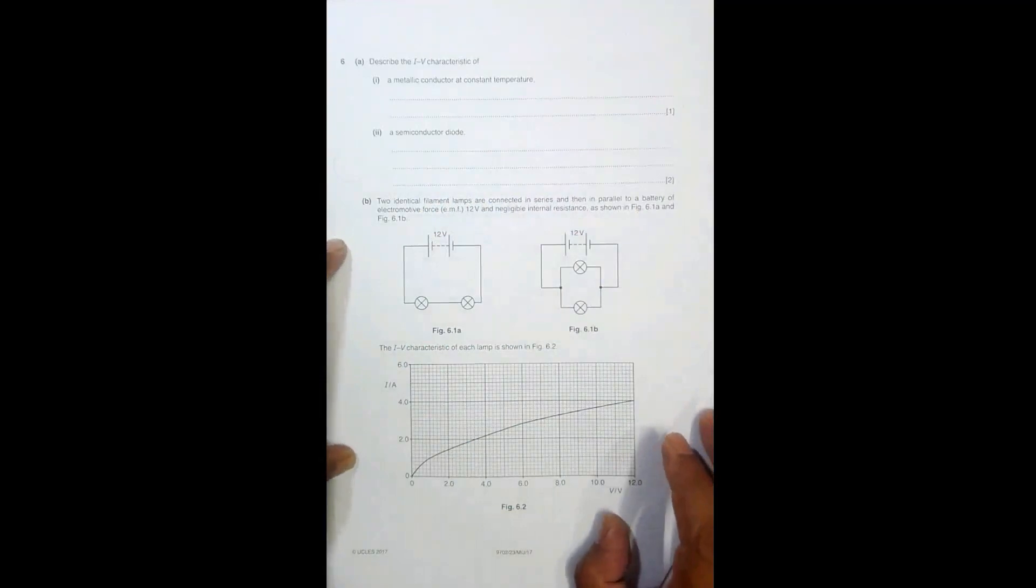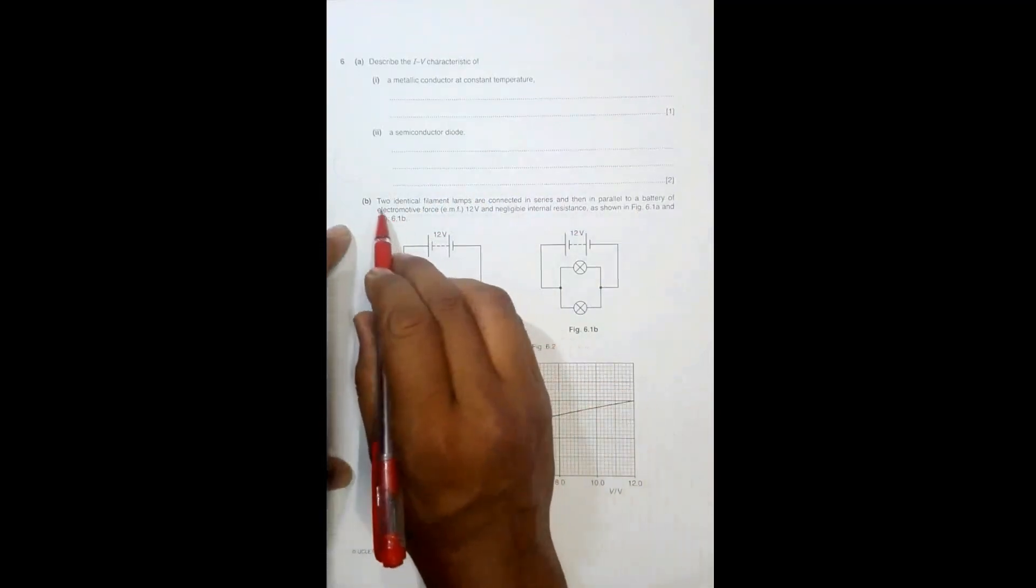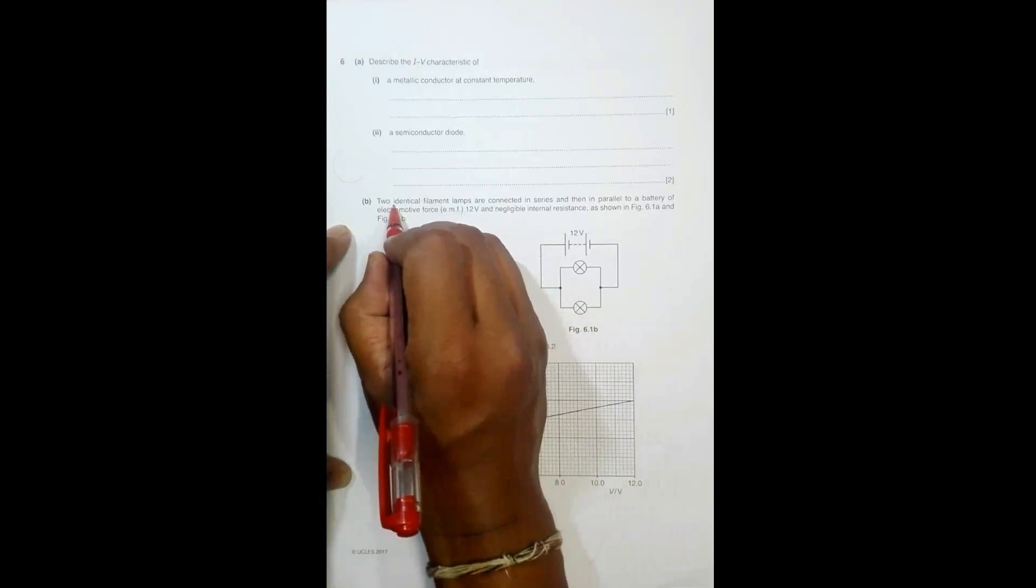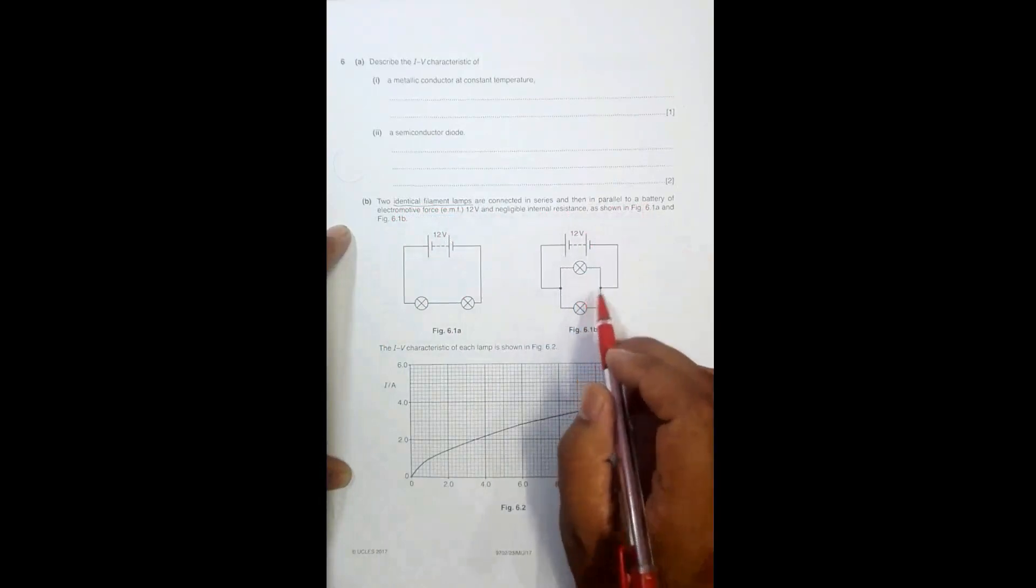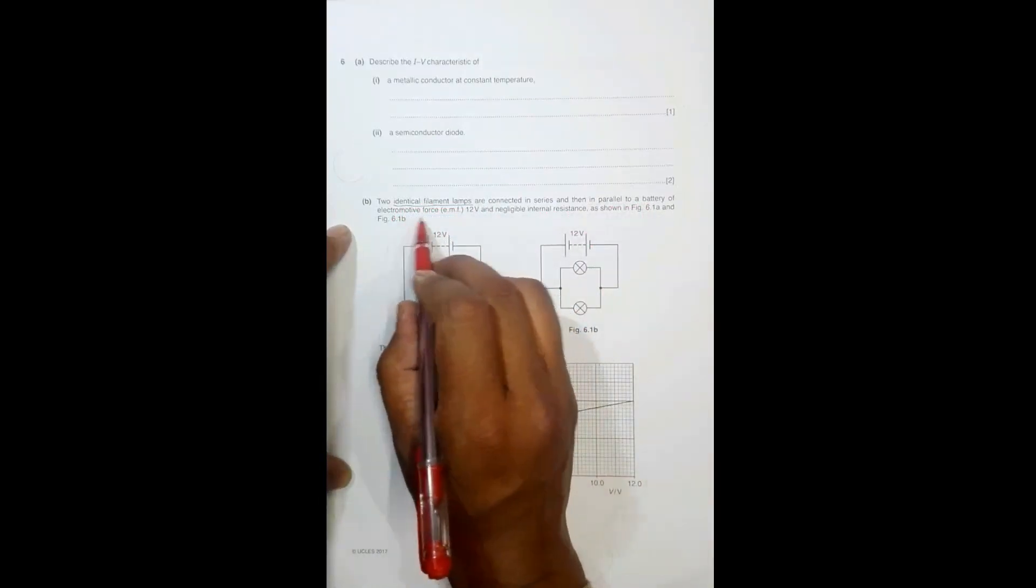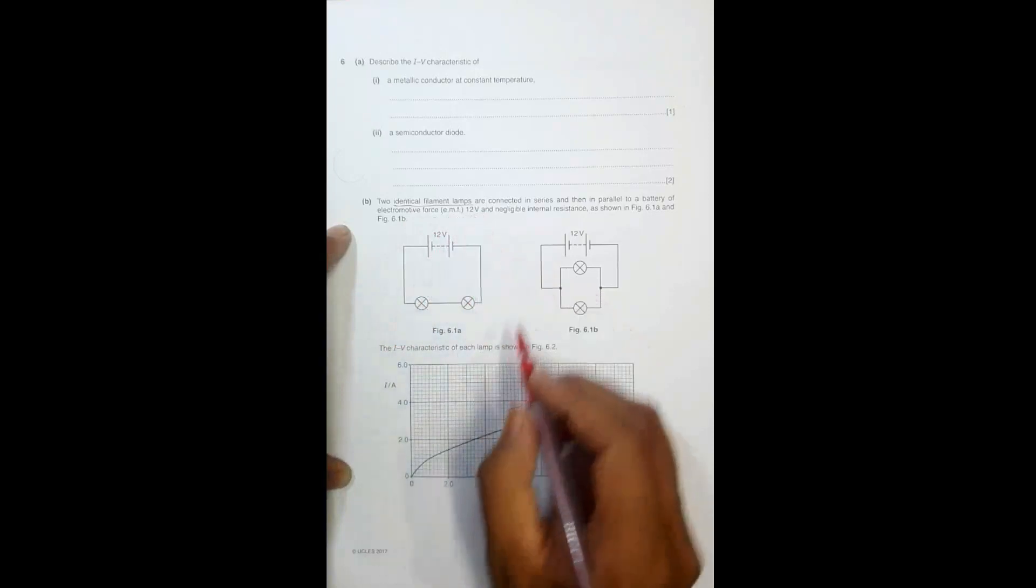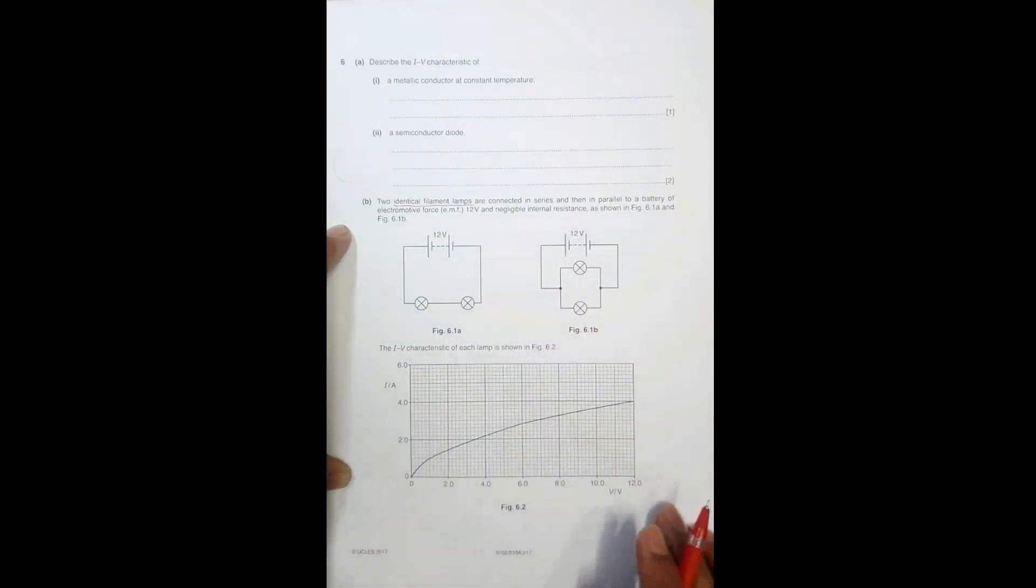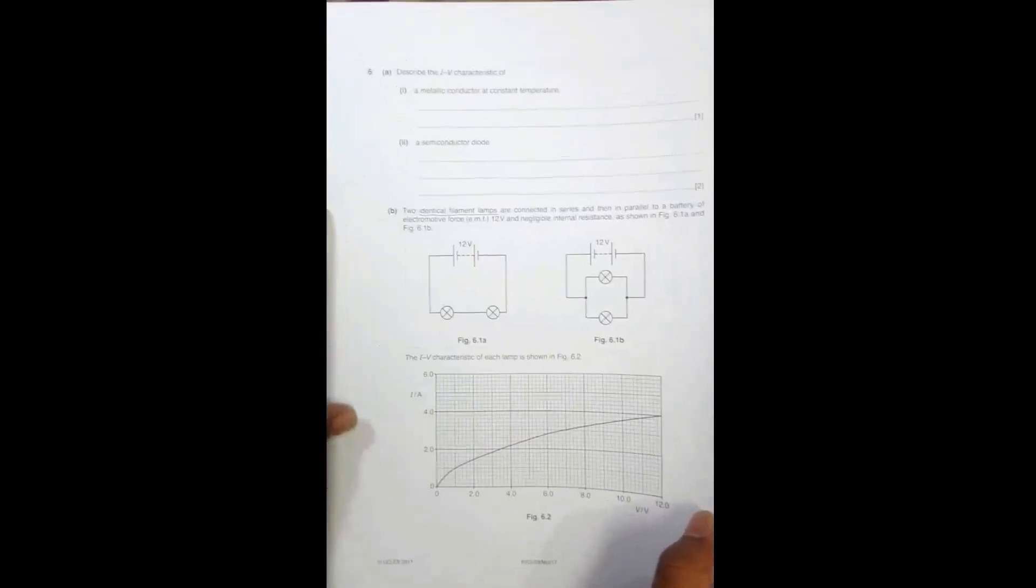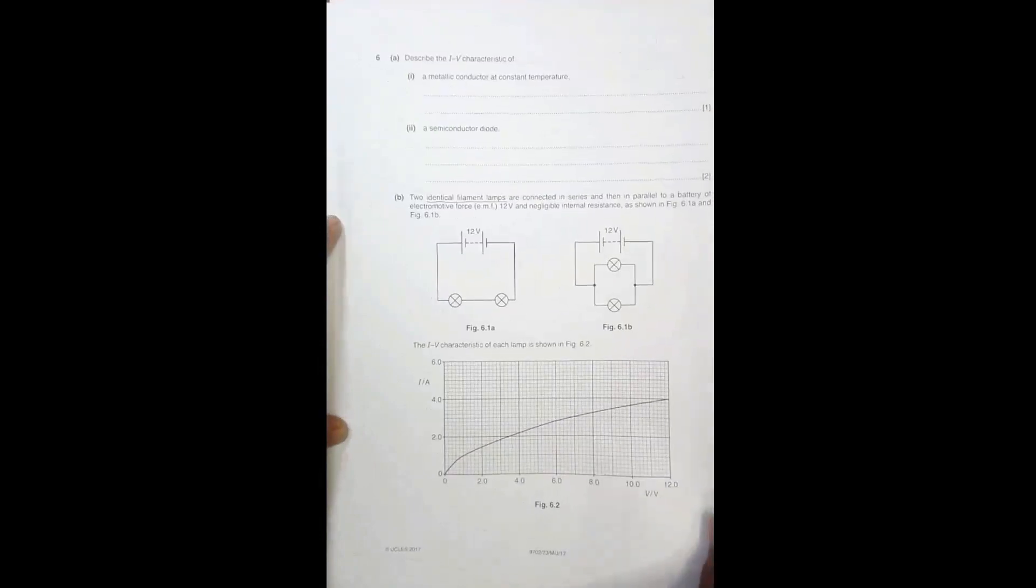Now part B: two identical filament lamps are connected in series and then in parallel to a battery of EMF 12 volt and negligible internal resistance as shown in figure 6.1A and 6.1B. The characteristic is given as you can see the graph curves more towards V as the value of V increases. Now we have to use this information to determine the current through the battery here and here.